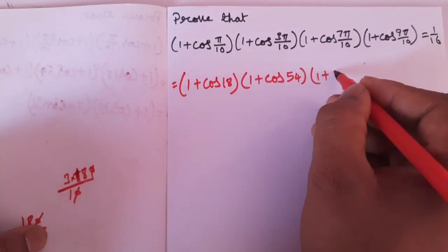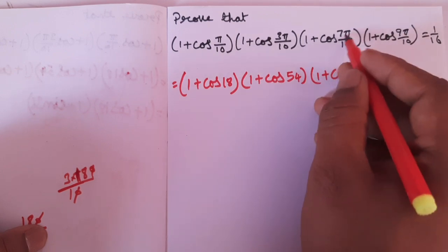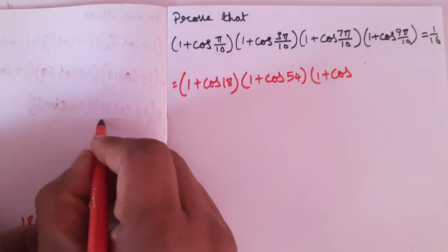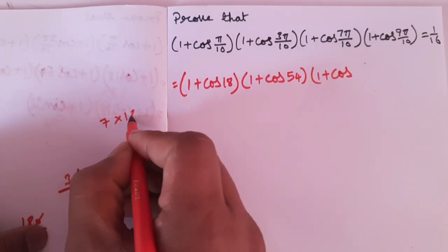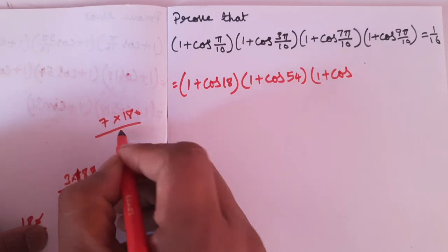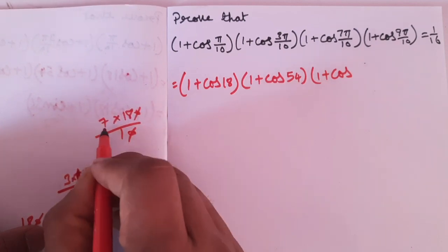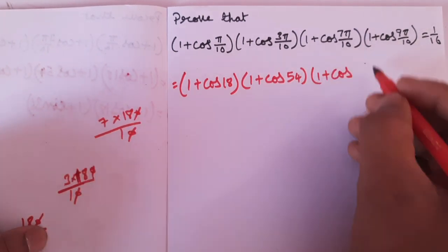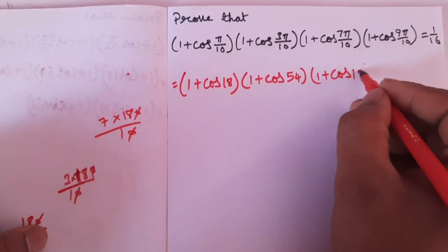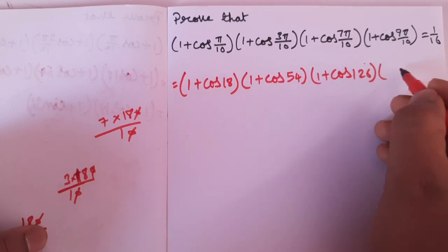Next, 1 plus cos(7pi/10). 7pi and 180, by 10 — E0, E0 cancel. 7 into 18.